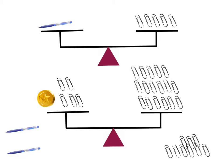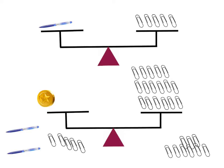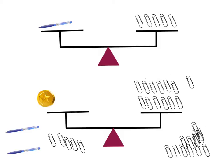So I can take off five paperclips from one side — one, two, three, four, five — and then I, of course, have to take off five paperclips from the other side. Now I'm left with just two things: one coin is equal to twelve paperclips.